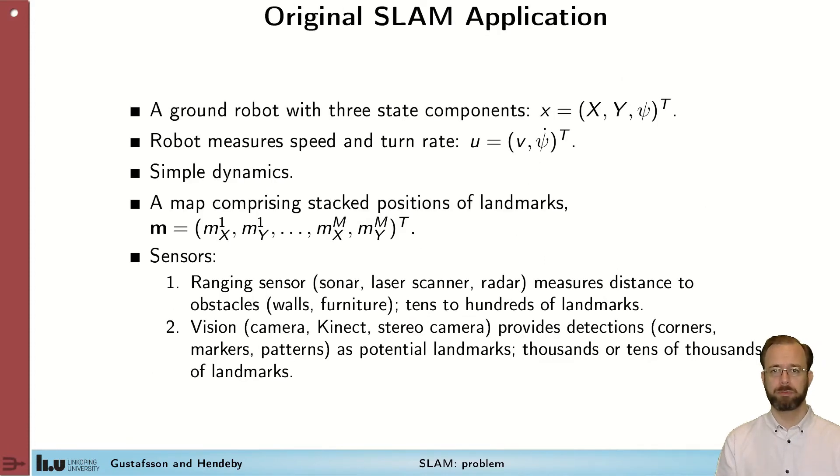When people started to work with SLAM, it usually incorporated a ground-moving robot that moved in 2D. It had a position and a heading. It was possible to measure the speed and the rotation of the robot. And they made the dynamics quite simple. Then a map was made of different feature points, so points in the environment that was expected to be re-seen and easily to recognize. And this robot carried a sensor that was either a ranging sensor, such as sonar, laser scanner, radar, something like that, that measured the distance to obstacles. And we used these obstacles as landmarks.